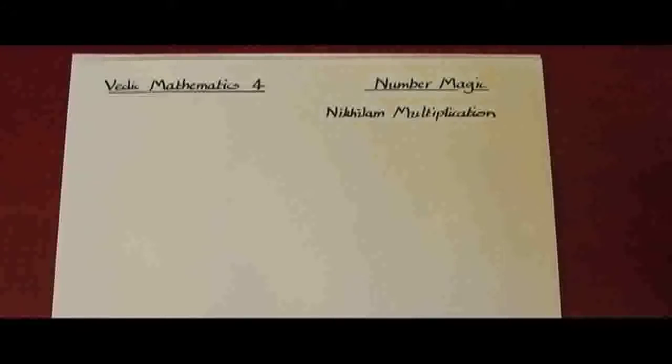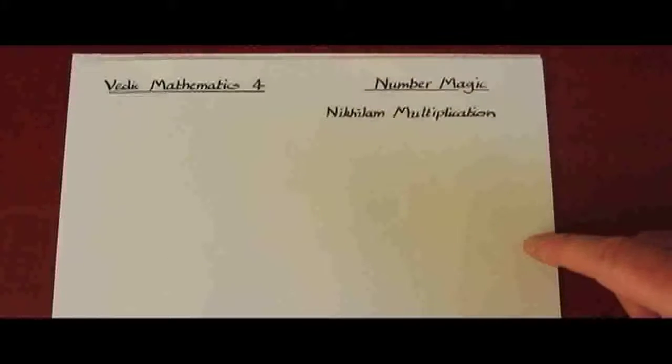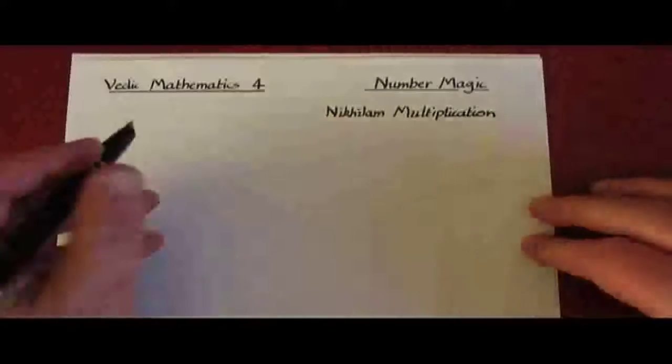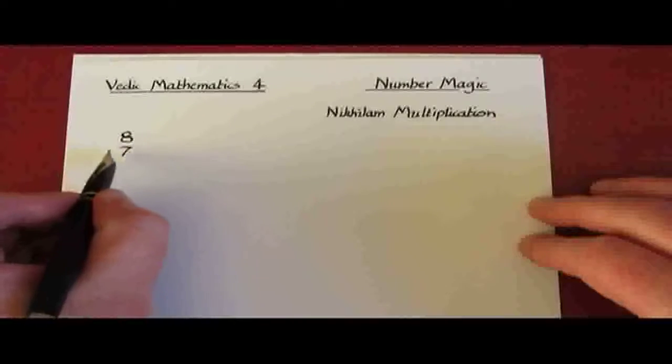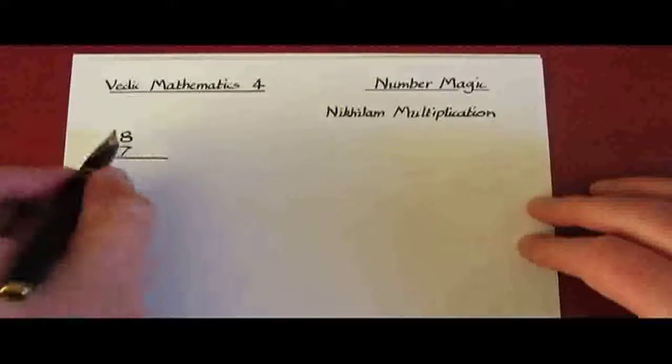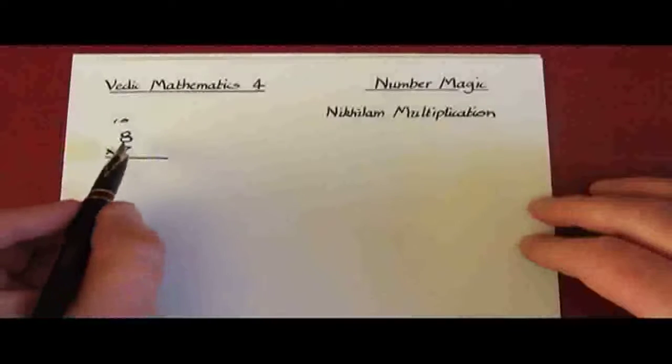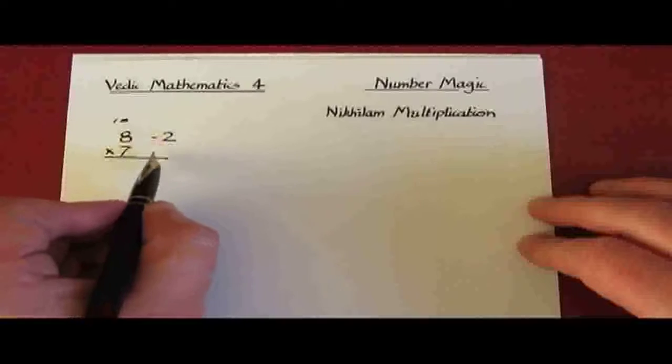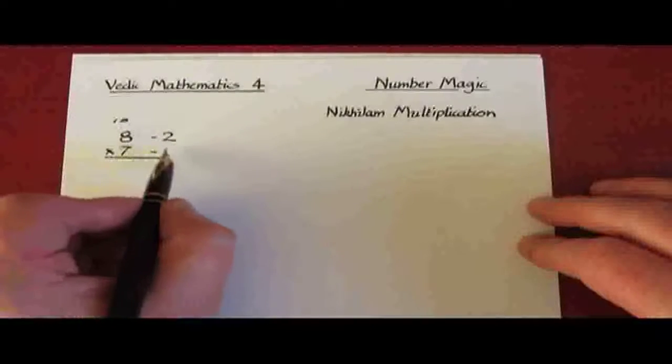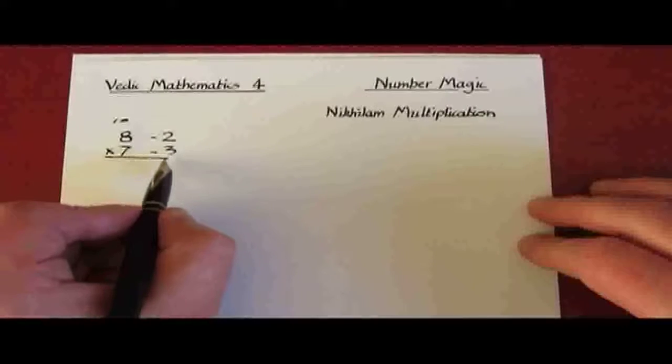The name Nikilam will be explained a little later, but we'll start with a very simple example so that you can see the basic method. Here we have 8 times 7. Relating both of these numbers to the base 10, we see that 8 is deficient by 2 so we put minus 2, and 7 is deficient by 3, minus 3.